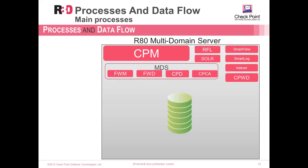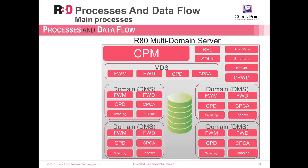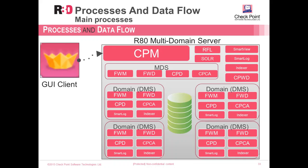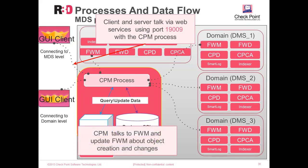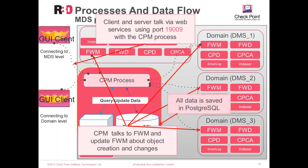In addition, we have our domain management servers with their different domains, each containing FWM, FWD, CPD, and CPCA processes, plus the Indexer and SmartLog for each domain to index logs and objects for that specific domain. The GUI client connects to the main CPM process to communicate with the multi-domain server towards the MDS IP address. The client and server communicate via the web services interface over CPM using port 1909. The CPM process communicates with each domain's FWM process, updating it about object creation and changes done in the PostgreSQL database.